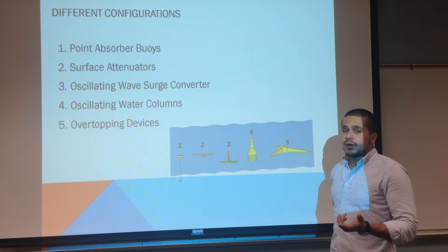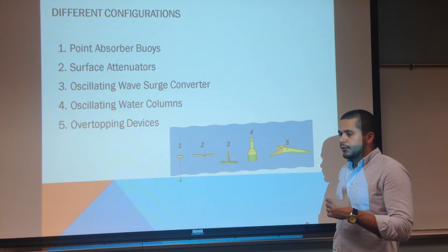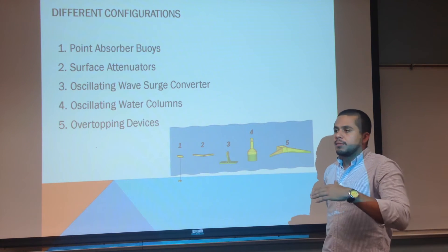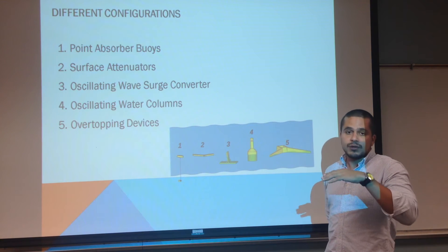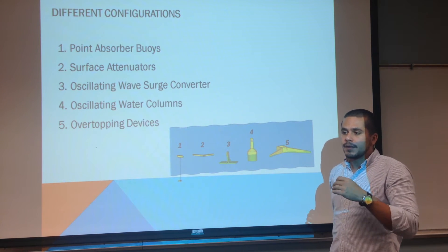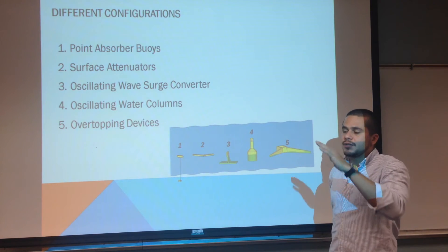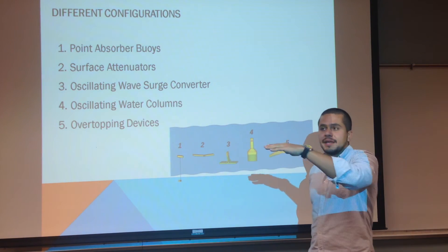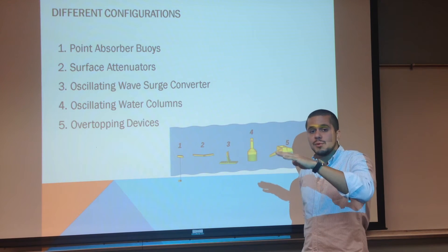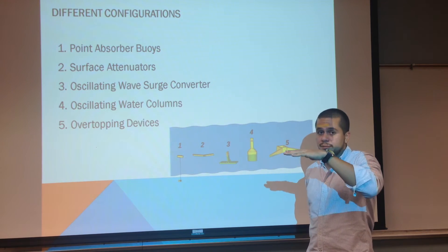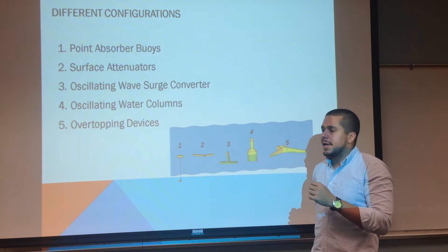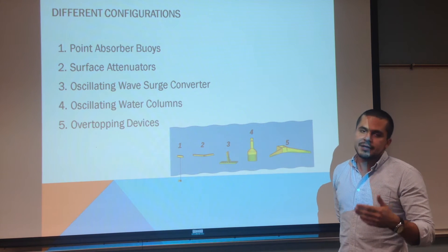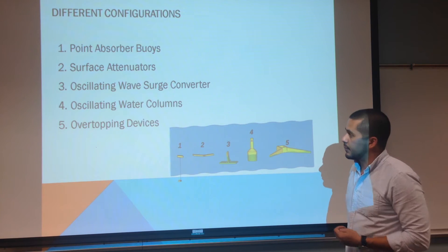Surface attenuators are to be imagined as several floating devices that move relative to one another. The movement of the waves changes the angles between these cylindrical flotation buoys, and that movement is transformed into electrical energy through the use of hydraulic rams.